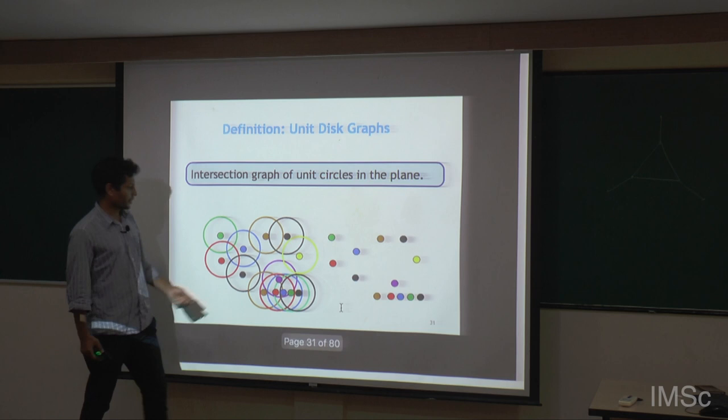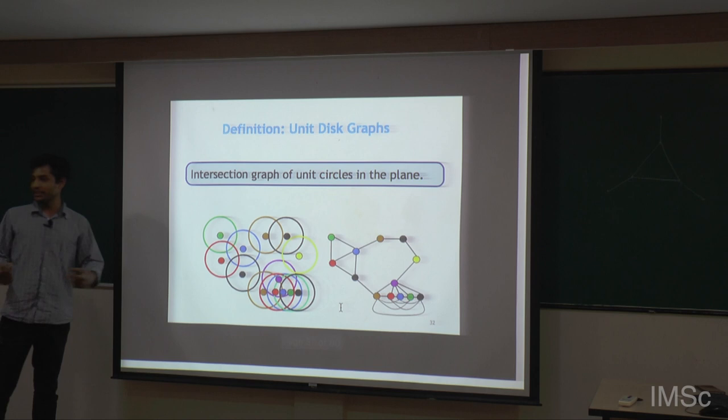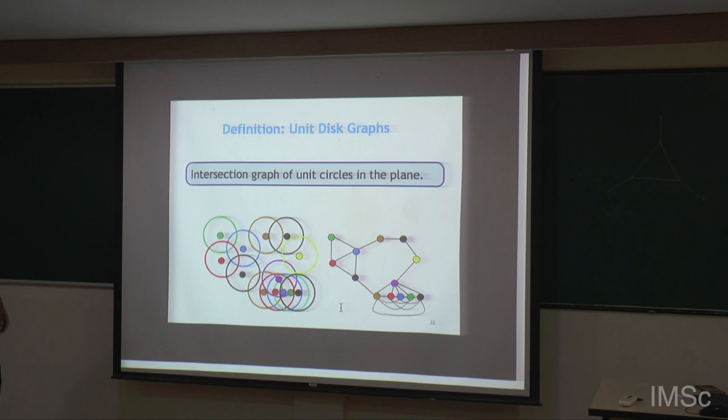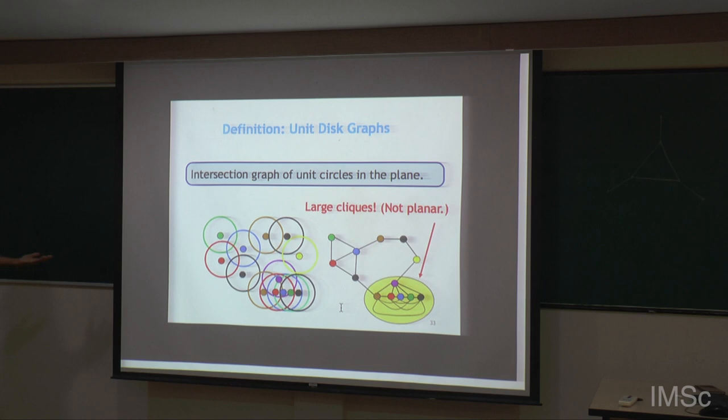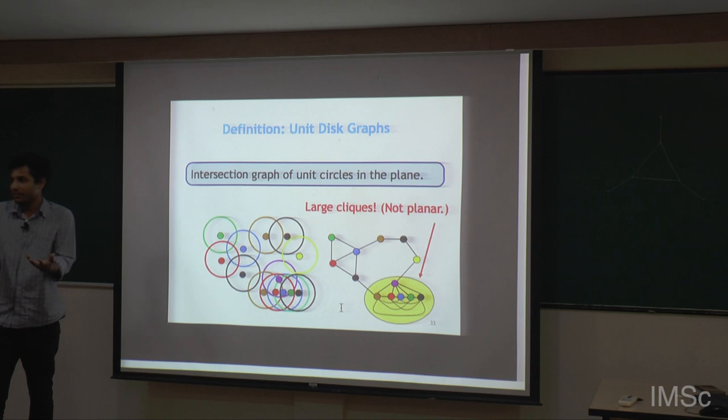Here is an example — at every center you put a vertex and add an edge if those two unit disks intersect. A unit disk graph can have a large clique because you can put many unit disks at the same place. Because of that, we cannot get a linear grid minor theorem, so in some sense this structured version is the best we can get.